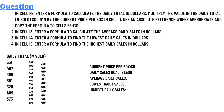In cell F2, enter a formula to calculate the daily total in dollars. Multiply the value in the daily total sold column by the current price per box in cell L1. Use an absolute reference where appropriate, and copy the cell to cells F3 through F31.